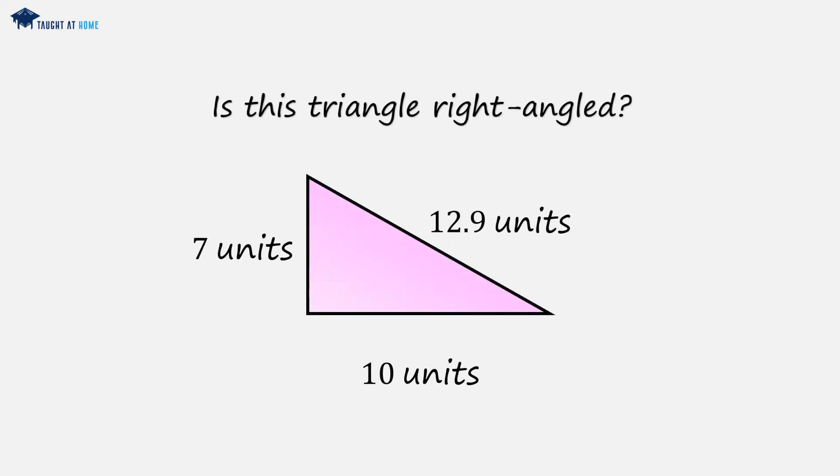Example 1. Is this triangle right angled? We've got a hypotenuse of 12.9 units and a shorter side of 7 units with a shorter side of 10 units. So we can call this side a, we can call this side b, and the hypotenuse c.